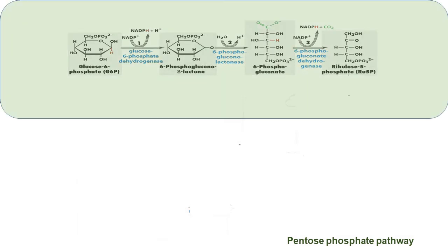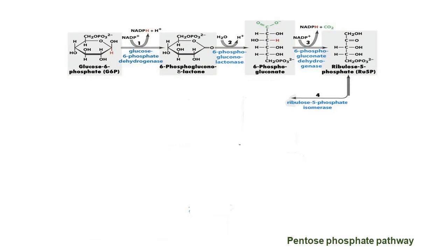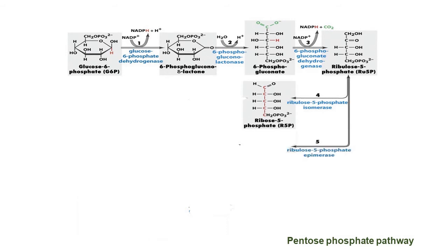The non-oxidative phase: these reactions are reversible, which allows different molecules to enter the pentose phosphate pathway at different areas and be transformed into the first molecule of the non-oxidative phase, ribulose 5-phosphate. Ribulose 5-phosphate is the precursor to the sugar that makes up nucleotides and is also a product of the oxidative stage. In the first step of the non-oxidative phase, ribulose 5-phosphate can be converted into two different 5-carbon molecules: ribose 5-phosphate by isomerase enzyme, which is the sugar used to make up DNA and RNA, and xylulose 5-phosphate by epimerase enzyme.